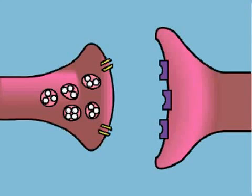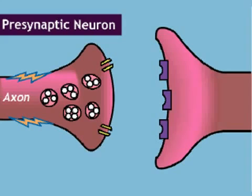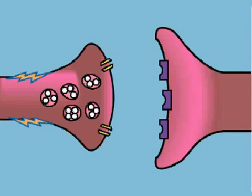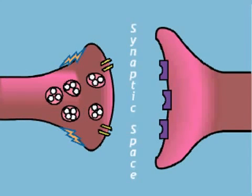Communication between two neurons begins when an electrical impulse called an action potential travels along the axon of a presynaptic neuron toward the axon terminal. The action potential cannot cross the synaptic space.